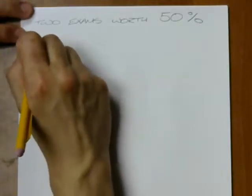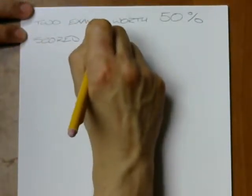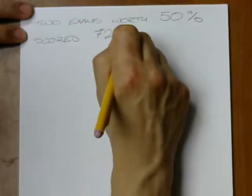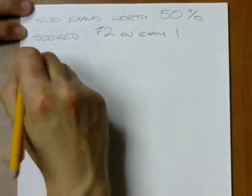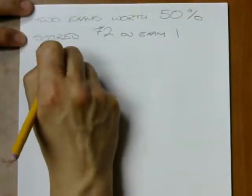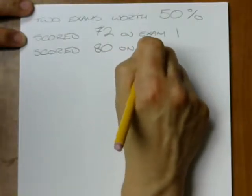And let's say you scored 72 on exam 1, and let's say you tried to score that 88, but you scored 80 on exam 2.